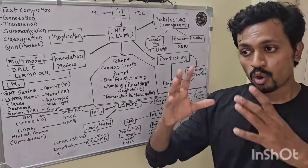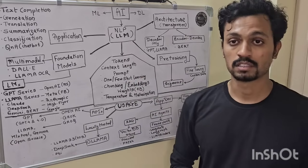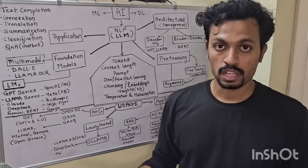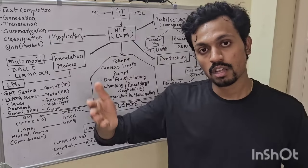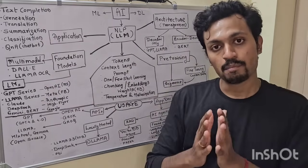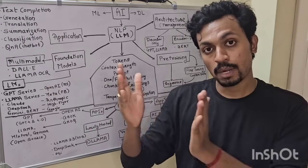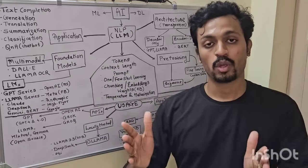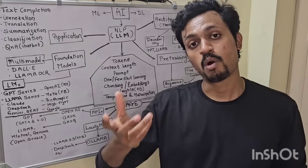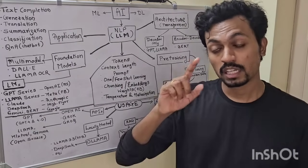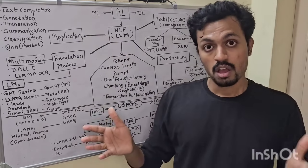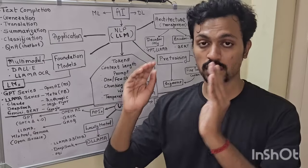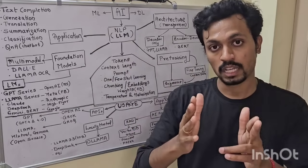Let's talk about some basic parameters. One key parameter is tokens. Tokens are how we break an input sentence into units — each word or sub-word becomes a token. Every LLM has a token limit: some models support 1,024 tokens, some 16,000 tokens. Each word is roughly one token. The maximum input size for a model is called the Context Length — this is very important when choosing a model.